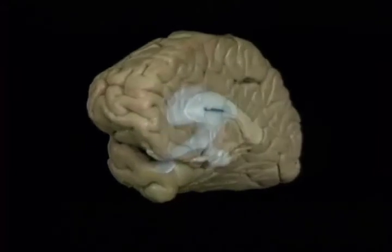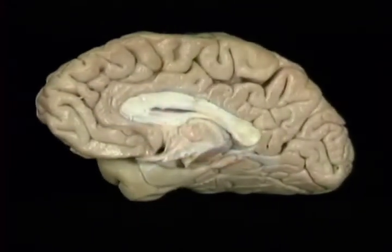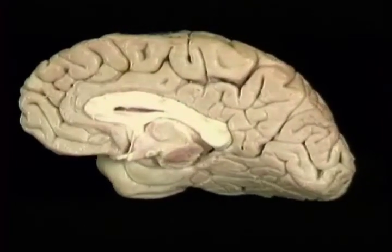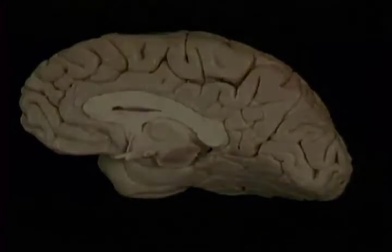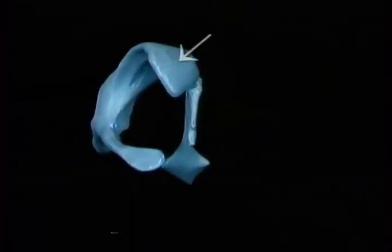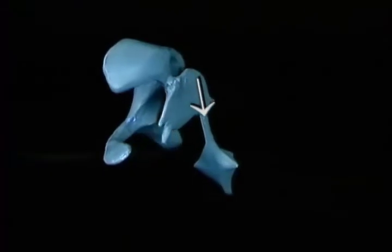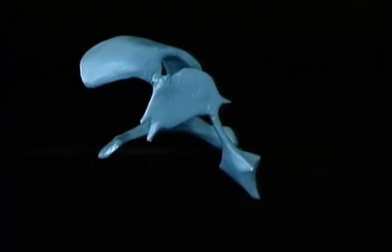To see where the lateral ventricle communicates with the third ventricle, we'll go around to a medial view. The communication is here at the interventricular foramen. To see how the lateral ventricle, the third ventricle, and the fourth ventricle are connected, we'll look at a brain that's been divided in the midline.